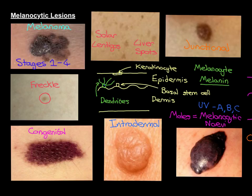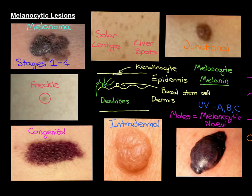Melanoma can arise from moles — it's a commonly known fact that moles can turn into melanoma. However, the risk for a melanocytic nevus turning into a melanoma is actually very, very low. In fact, the majority of melanomas don't arise from moles. They instead arise spontaneously from areas of skin that were not affected by moles.